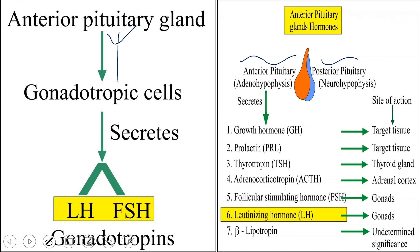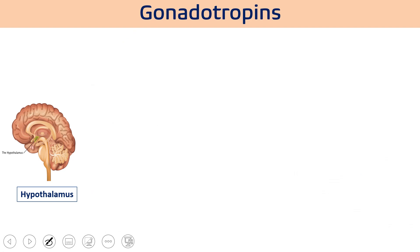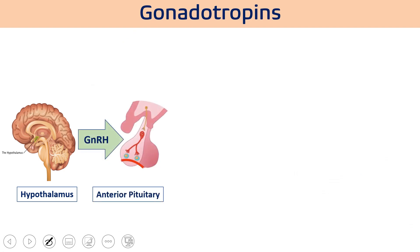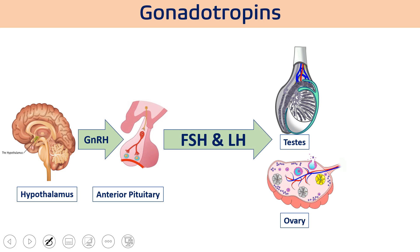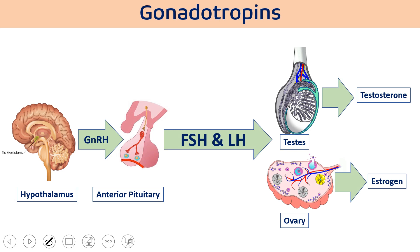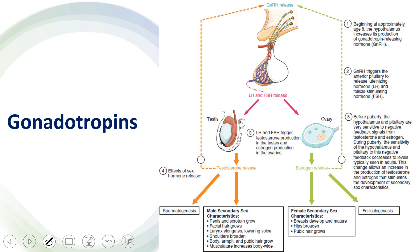Among these, FSH and LH have their main target on the gonads — testis and ovary. Whenever the body gets a sensation, the hypothalamus releases GnRH, which works on the anterior pituitary gonadotropins. FSH and LH work on the gonads: the testis releases testosterone and the ovary releases estrogen. Testosterone induces spermatogenesis, and estrogen drives ovulation and maturation of the egg for fertilization.